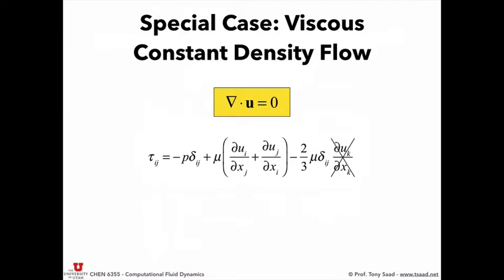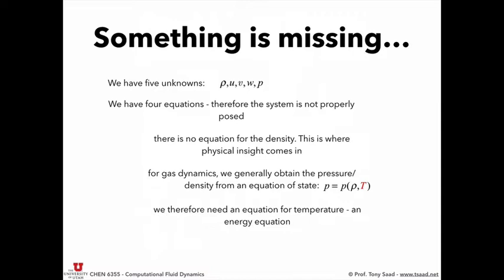Another special case: viscous constant density flow. Viscosity is not zero, but you have constant density so div U equals zero. That simplifies the stress tensor significantly. Now, we have five unknowns — rho, U, V, W, and pressure — but only four equations: one continuity and three momentum equations. If you remember your math, that is an ill-posed problem. We still need one more equation.